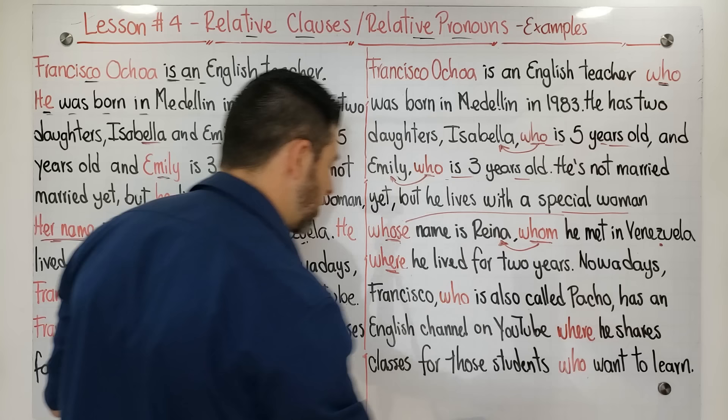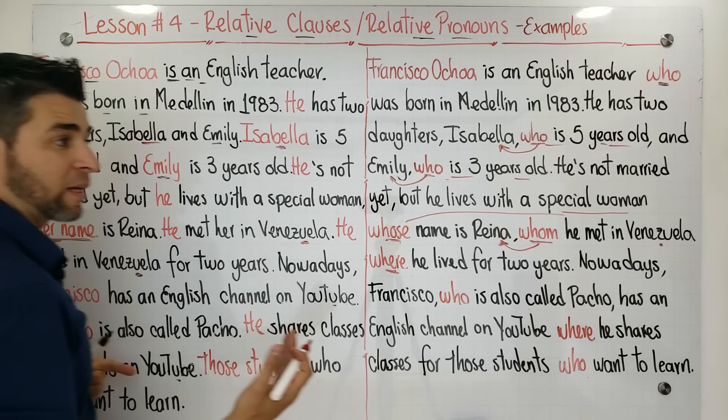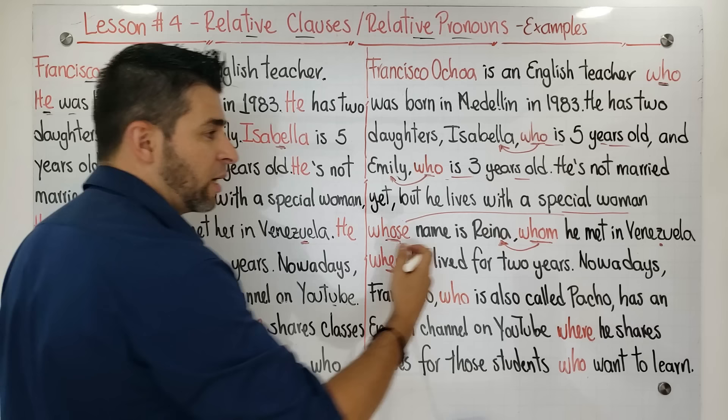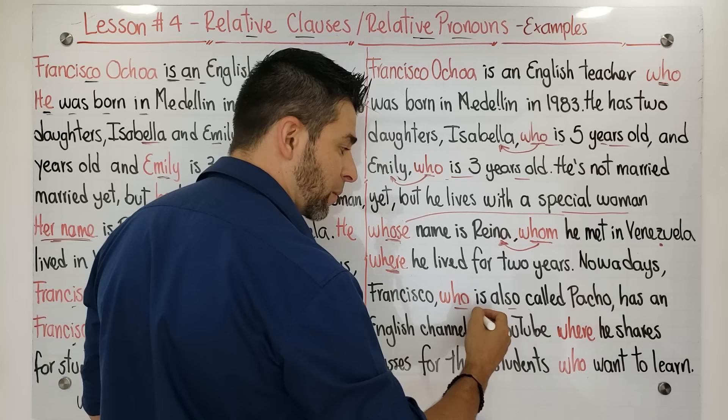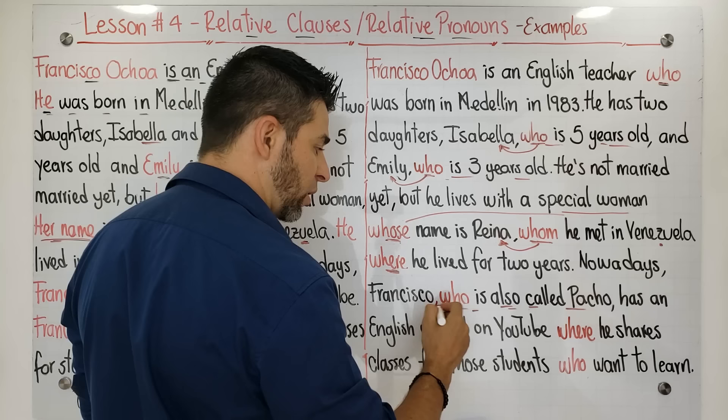'...where he lived for two years.' What is this 'where' talking about? It's talking about Venezuela. Remember that in the first version I repeated Venezuela twice, but with this 'where' I'm replacing one instance of Venezuela — I only mention Venezuela once. So: '...in Venezuela, where he lived for two years. Nowadays Francisco, who is also called Paco...'